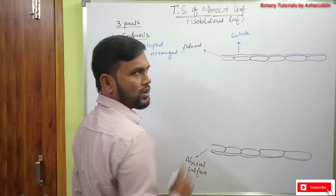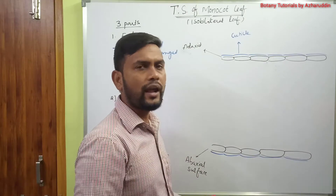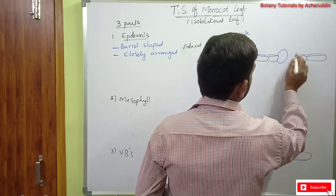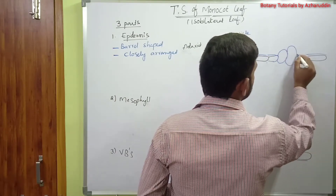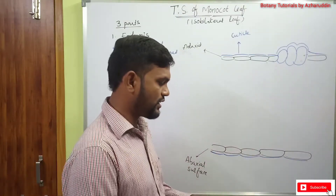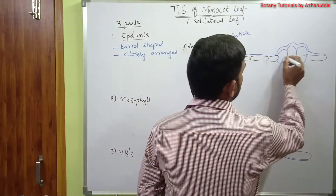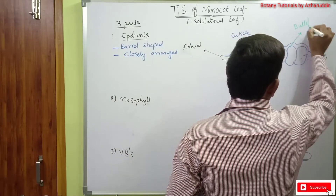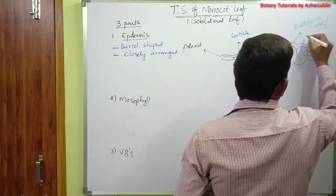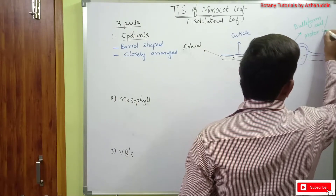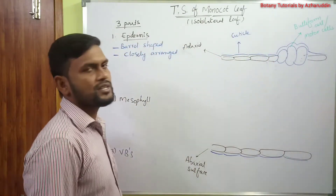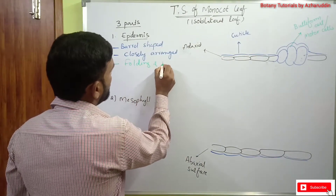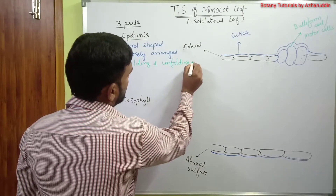In some monocots, in the upper epidermis, some cells are enlarged. These enlarged cells contain thin walls and are filled with water. These cells are called bulliform cells, otherwise also called motor cells. The main function of bulliform cells or motor cells is the folding and unfolding of leaves.